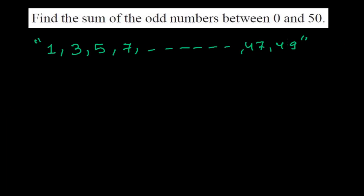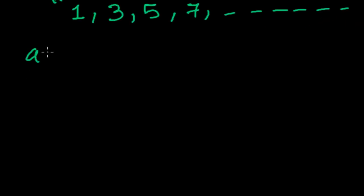This is an arithmetic sequence with the first term 1 and the last term 49. So I can write here: first term a equals 1 and the last term l equals 49. Now we need to find the sum of this sequence, and it becomes a series.